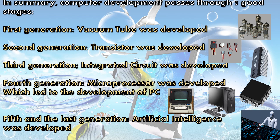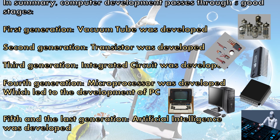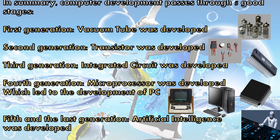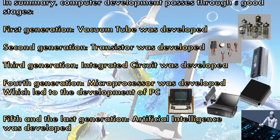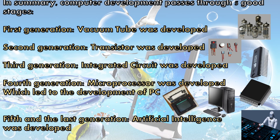In summary, computer development passes through five stages. First generation: vacuum tube was developed. Second generation: transistor was developed. Third generation: integrated circuit was developed. Fourth generation: microprocessor was developed, which led to the development of the PC. Fifth and the last generation: artificial intelligence was developed.